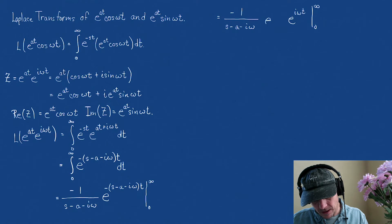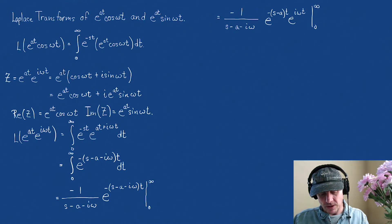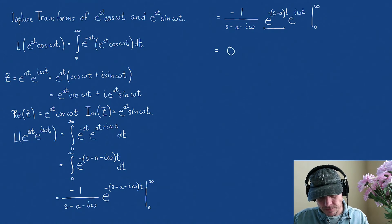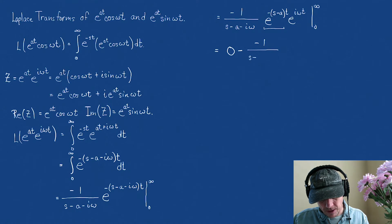When this goes to infinity, we know that the first term becomes zero — we've already said that has to be true, otherwise there's no Laplace transform. So we have zero. And when we evaluate at zero, we pick up a minus — all of these exponential terms become ones. So we have minus, minus one over s minus a minus i omega, which gives us plus one over s minus a minus i omega.